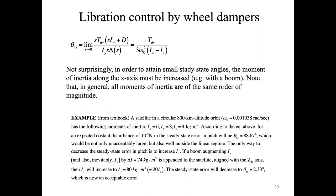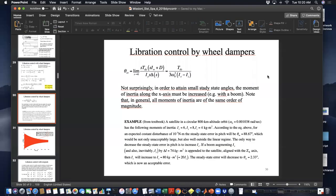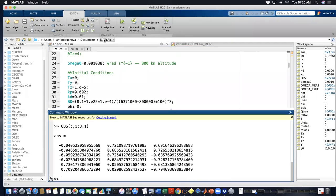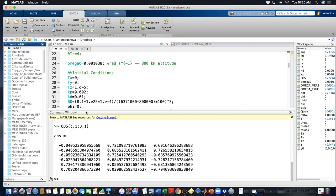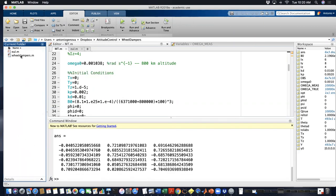Before going to thrusters, we need to show why wheel dampers are not well suited to control spacecraft attitude, and that's the reason why they are not widespread used in space applications anymore. One of the main disadvantages — the problem was not fully clear yesterday — can be shown from the example we have in MATLAB.